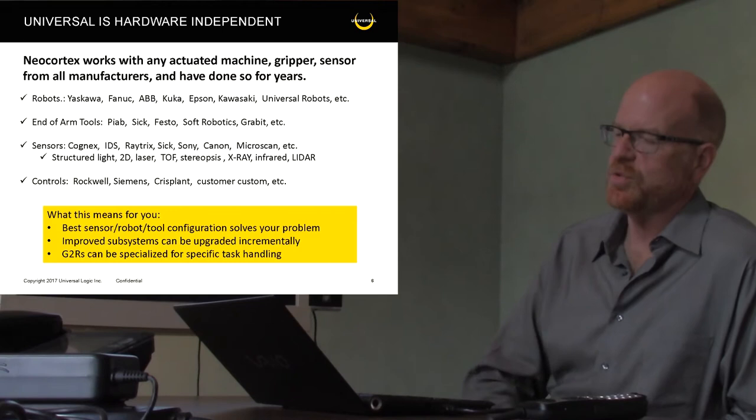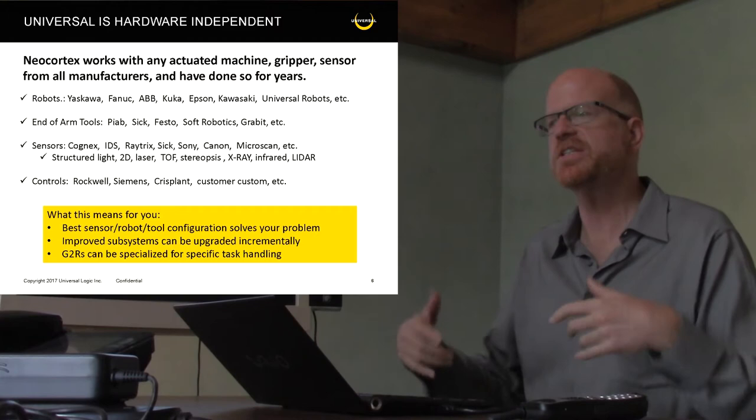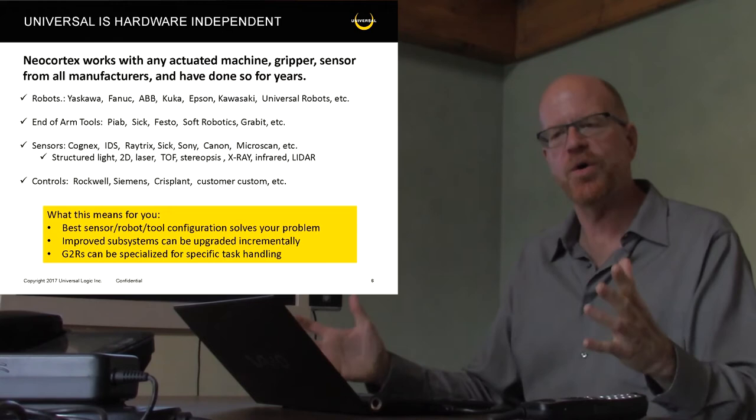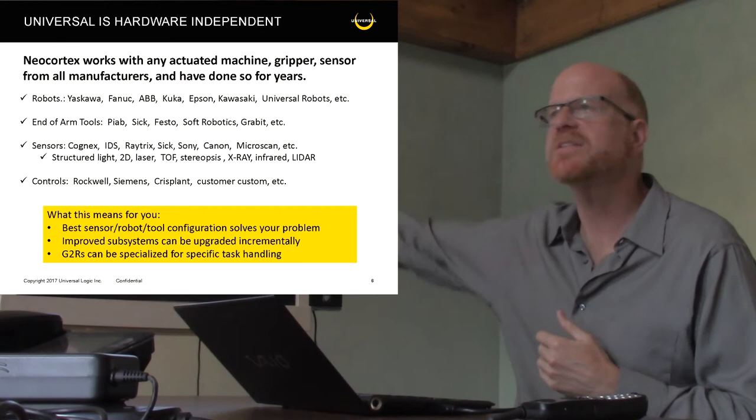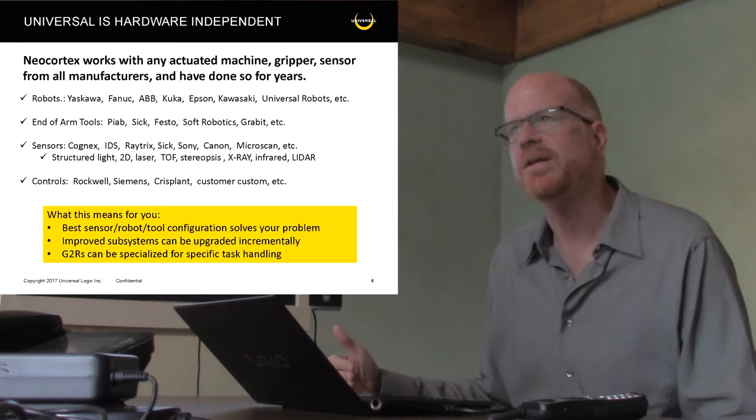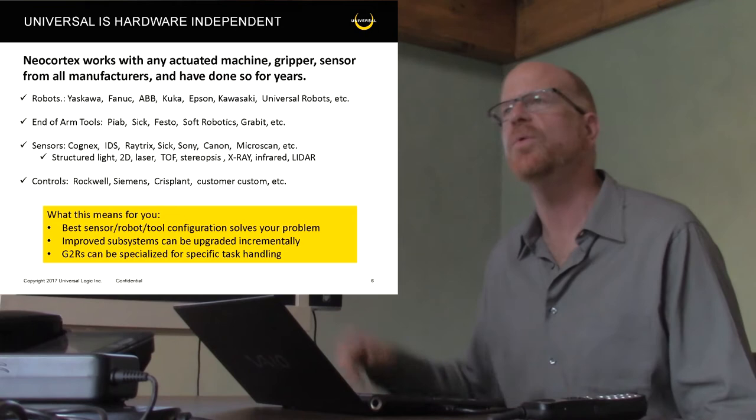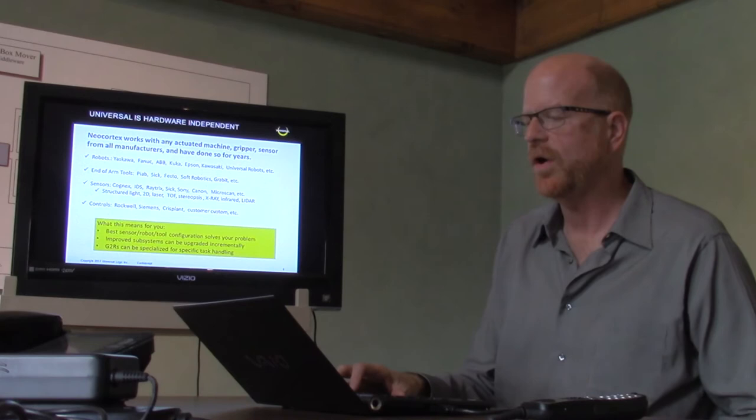What it means for you as a customer: best sensor-robot-tool configuration solves your problem. We're always looking at what's the most efficient way to do this from a cost perspective and time to market. Improved subsystems can be upgraded. Let's say we've given you a sensor because your application only requires 10 millimeters of accuracy. But we know that if we gave you 5 millimeters of accuracy, we could pick up a smaller box, for example. The sensor companies are constantly pushing the technology. As those upgrade, they can be folded in. We may call you a couple years later and say there's a new sensor. We'll come in and put it in, quote it as an upgrade, and now it's more capable.